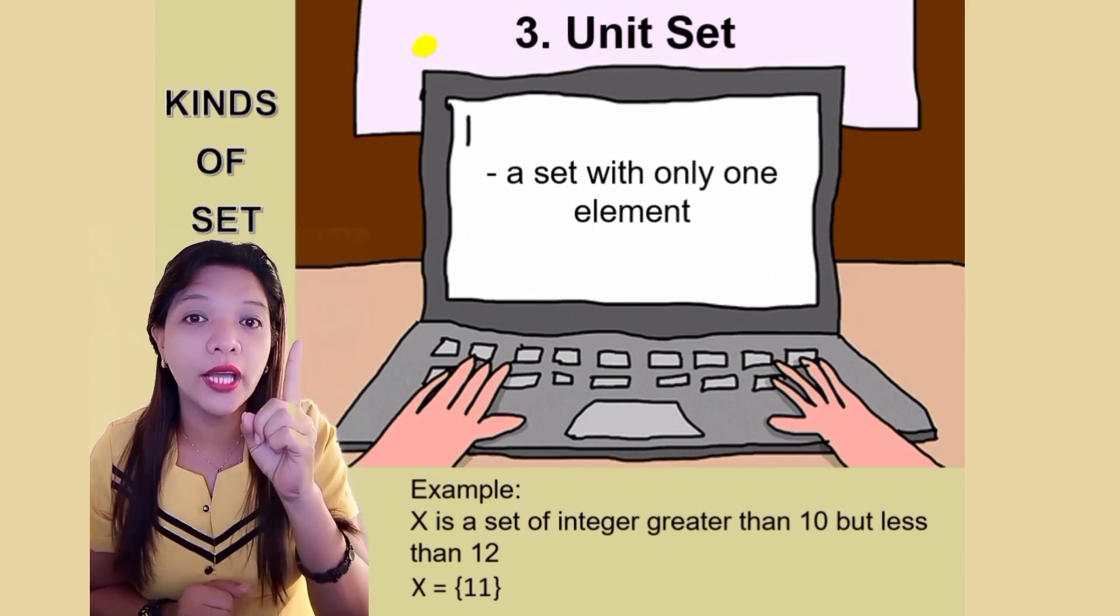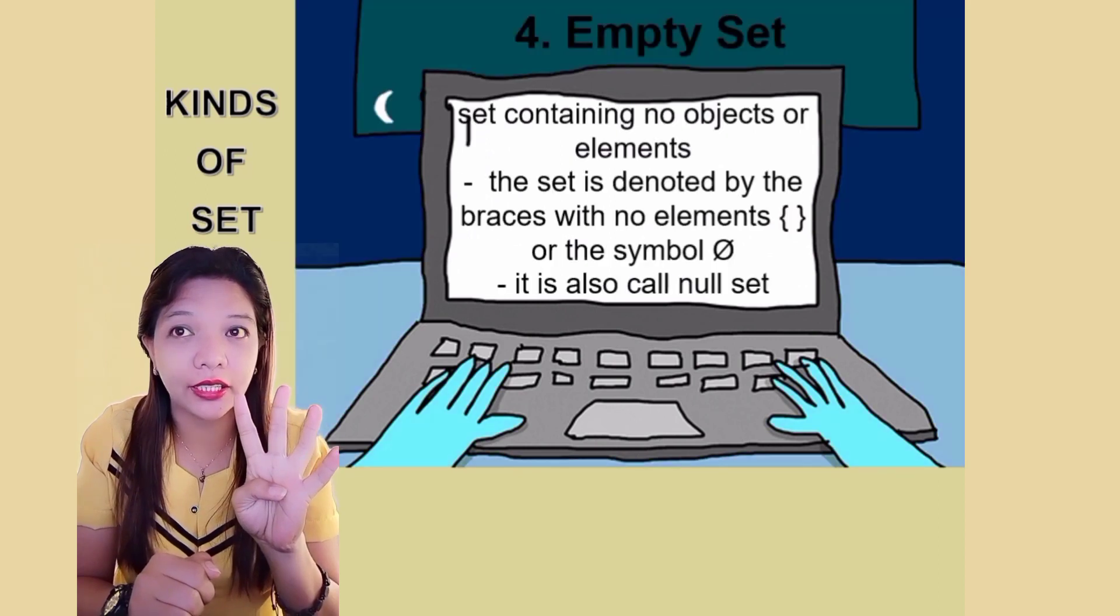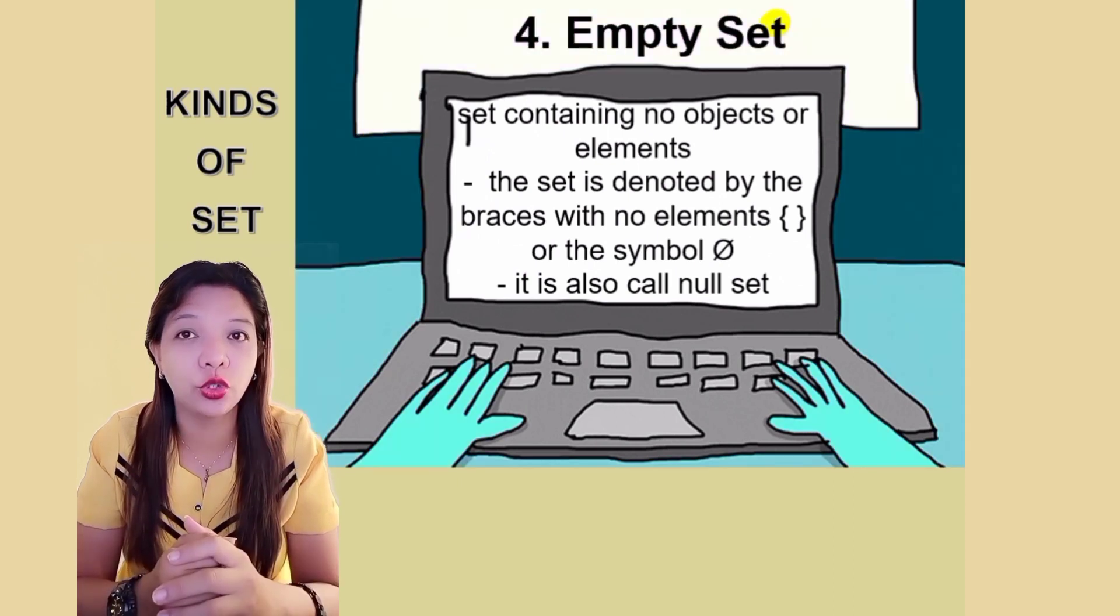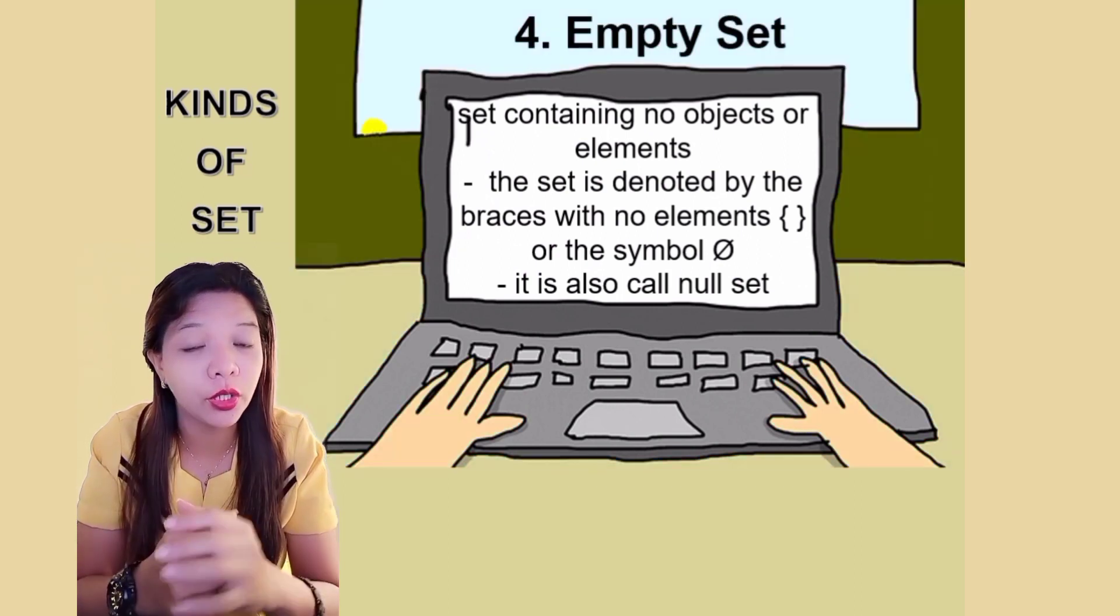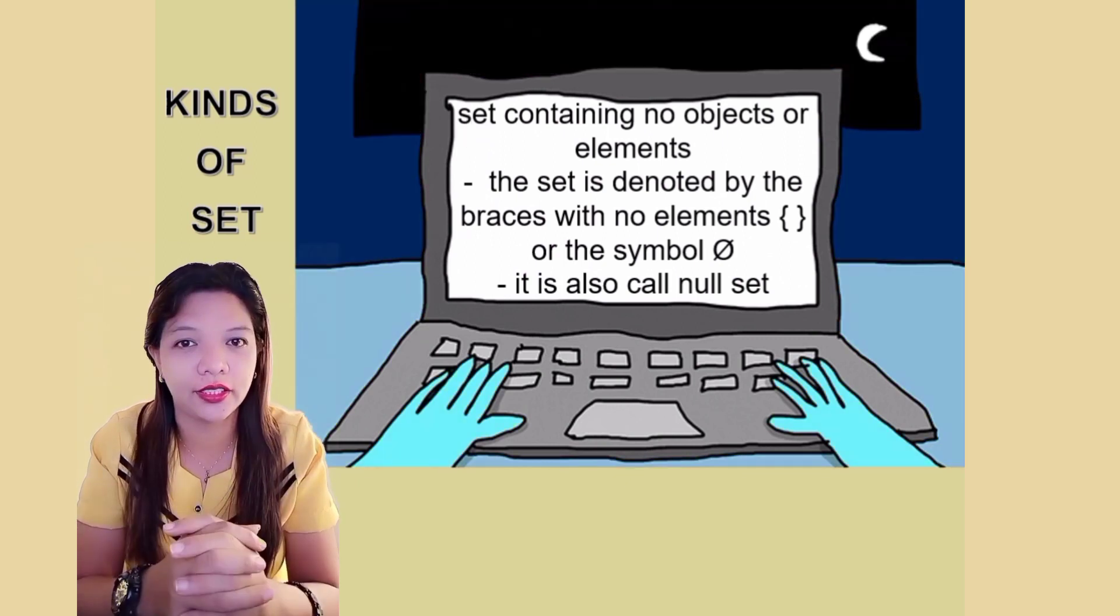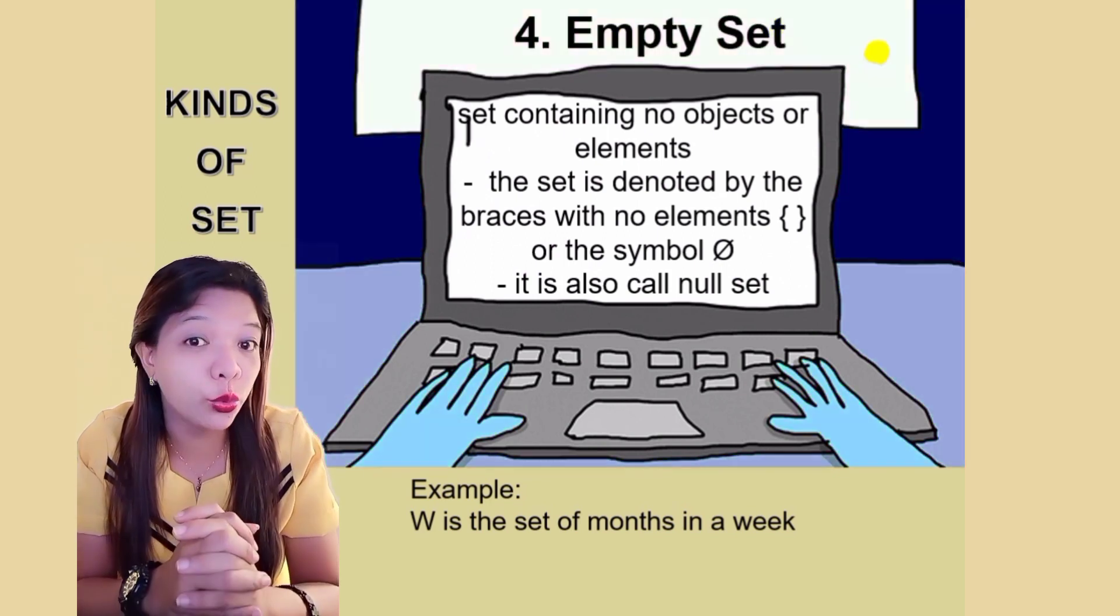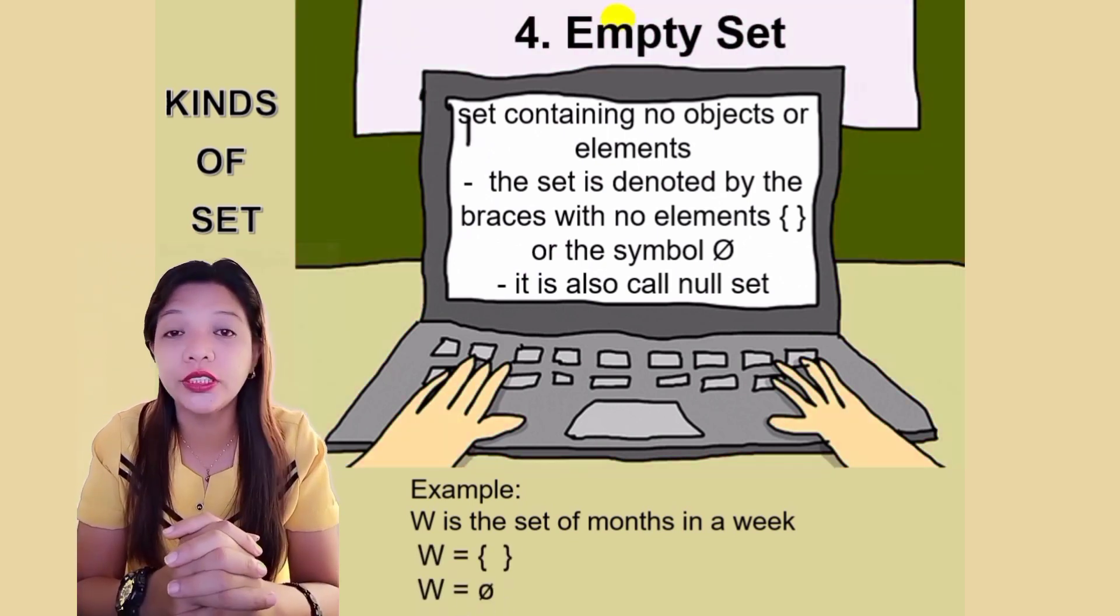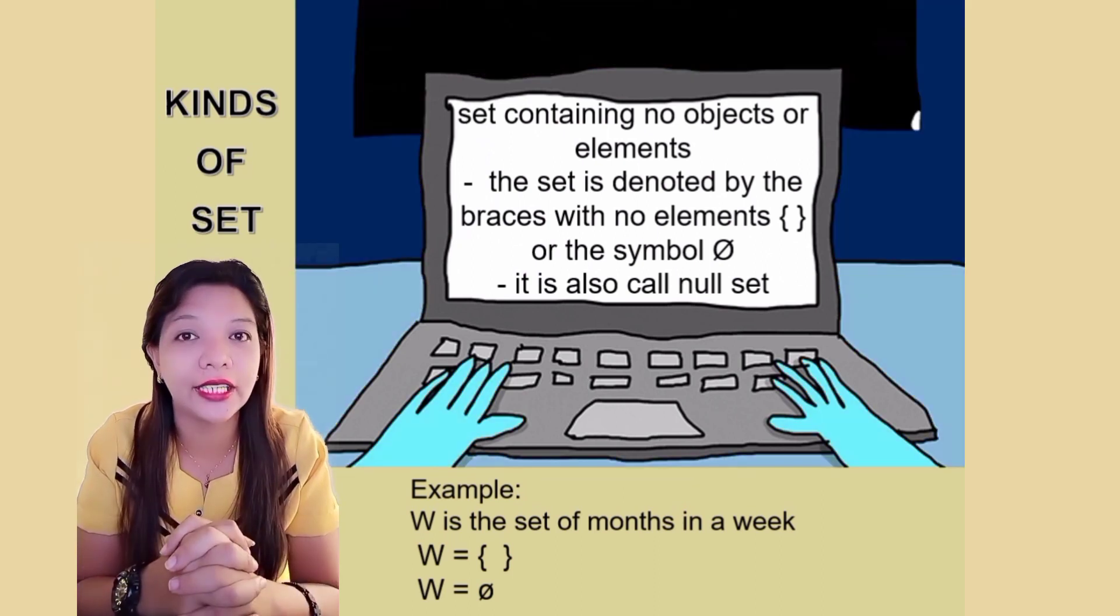We only have one element inside it. Our four kinds of set is the empty set, a set containing no objects or elements. The set is denoted by the braces with no elements, open and close braces, or the symbol zero and slash. It is also called the null set. Let's have our example. W is a set of months in a week. Do we have a month in a week? None. W is equals to open brace, close brace. There are no elements inside it.